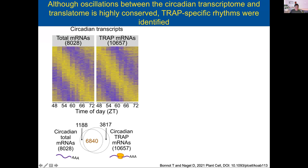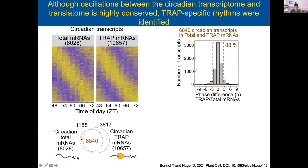For the first question — is the transcriptome and translatome similar in terms of oscillations — we do see a nice conservation between the two. There's a huge conservation between these two mRNA populations and most genes are shared. We also observe similarity in terms of phases: the phase seems to be conserved, and the majority of genes seem to have a similar phase of expression, with a subset showing shifts of one to three hours.